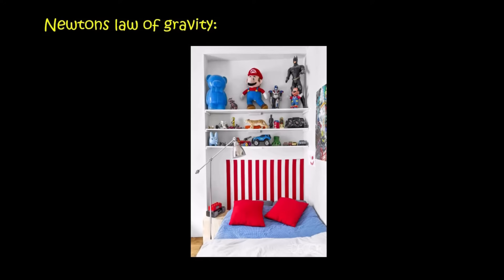So for example, this Super Mario toy over here is being attracted to the Batman, and the Batman is being attracted to the Super Mario. So then Kevin, why aren't they moving towards each other? Good question. That is because the force is so small that we don't see anything.